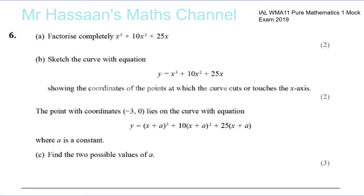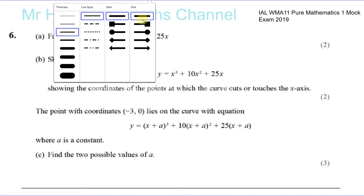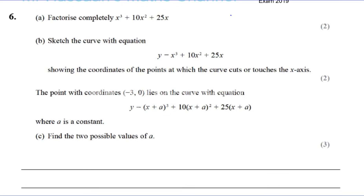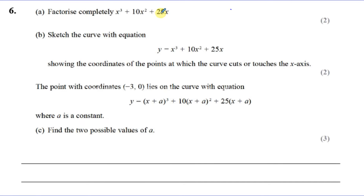Now we have question number six from the mock exam that I made for my students for P1 international A-level. Here we're asked first of all to factorize completely this expression, which is a cubic expression: x cubed plus 10x squared plus 25x. This is part A.